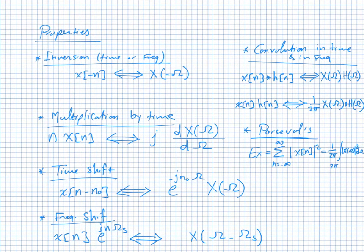There is no duality property for the DTFT because the signal nature in time and frequency are different — one is discrete, one is continuous. The duality would be very difficult to deal with.